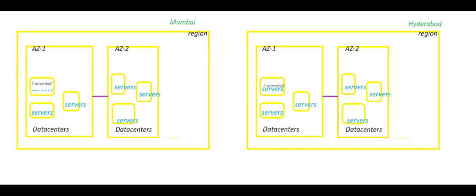You can provide the communication between those two by using a connectivity concept in EC2. We can provide connectivity between two regions by using VPC peering. What is this VPC peering concept?